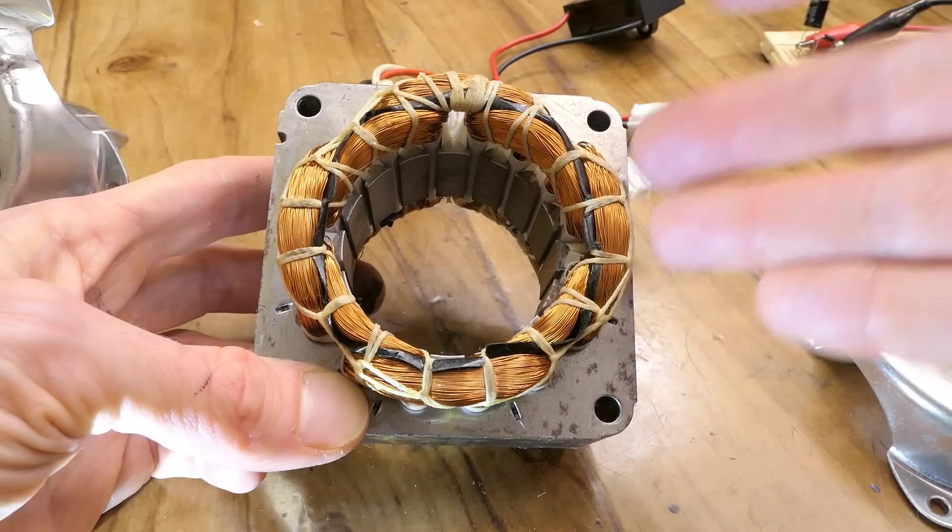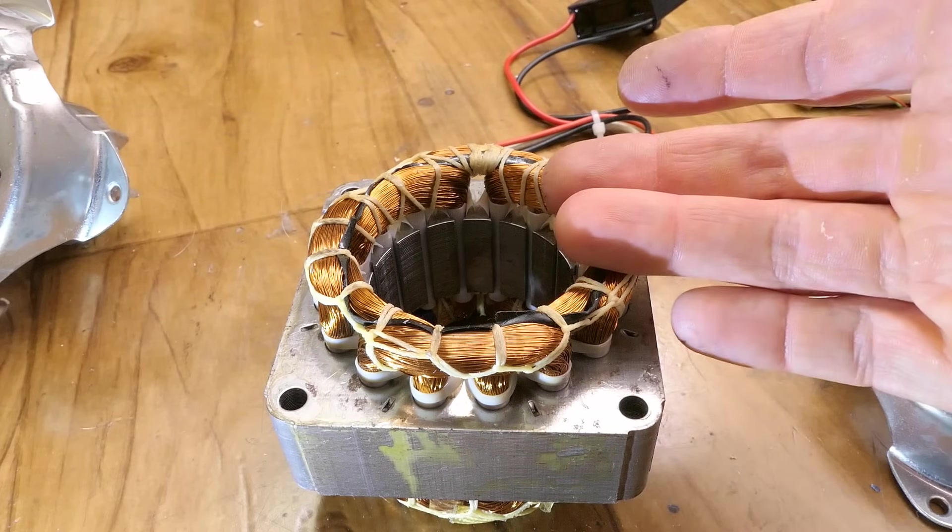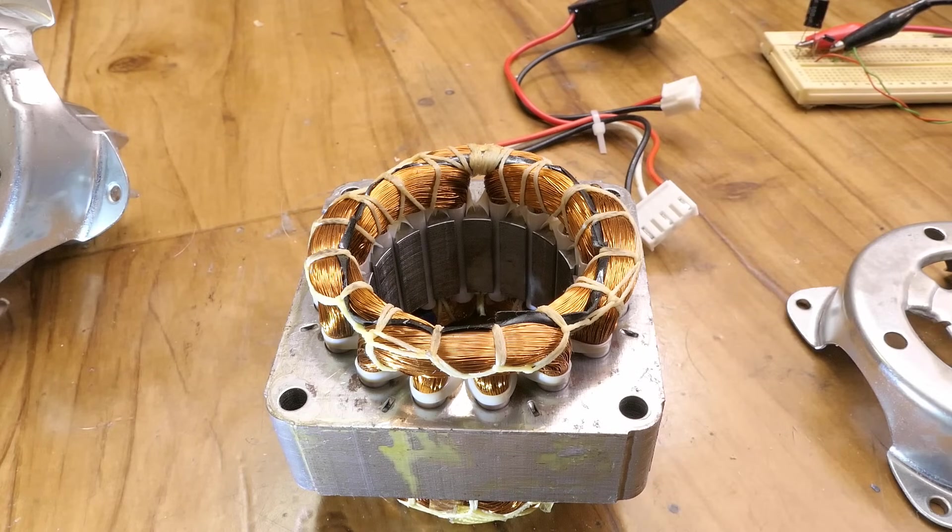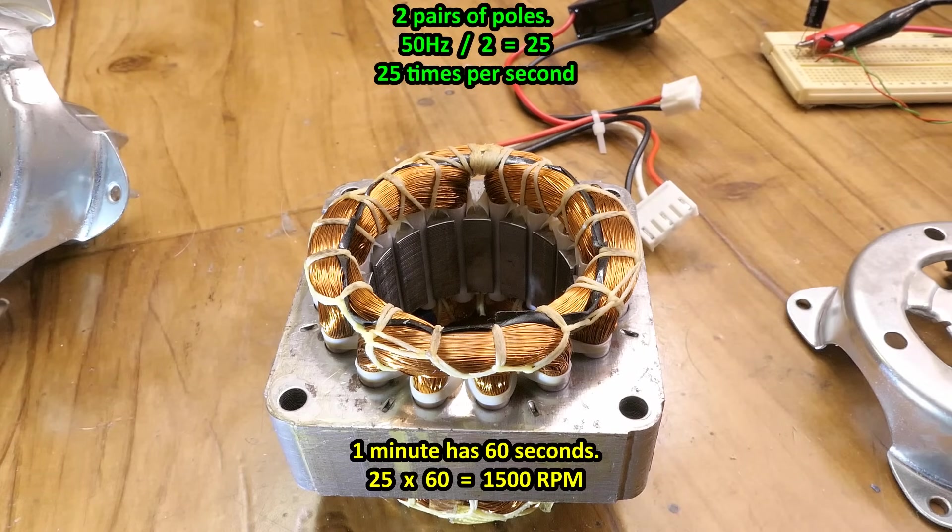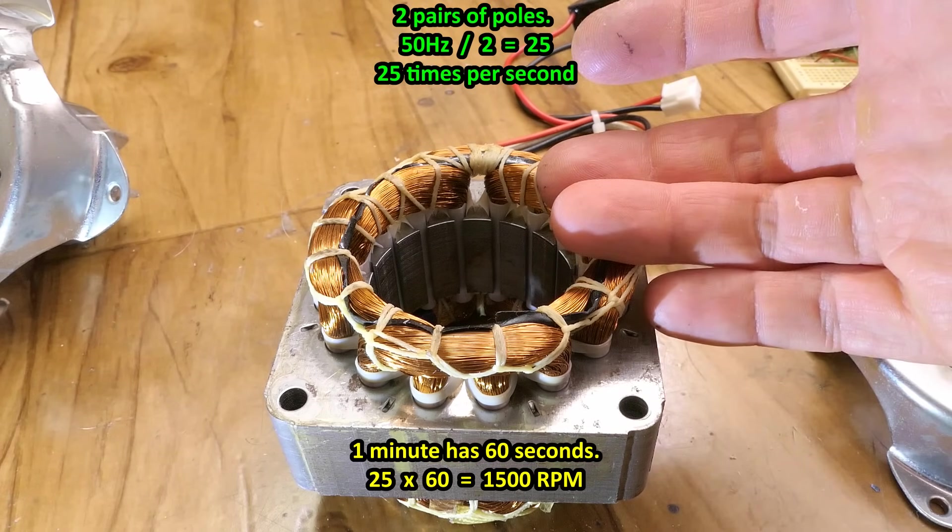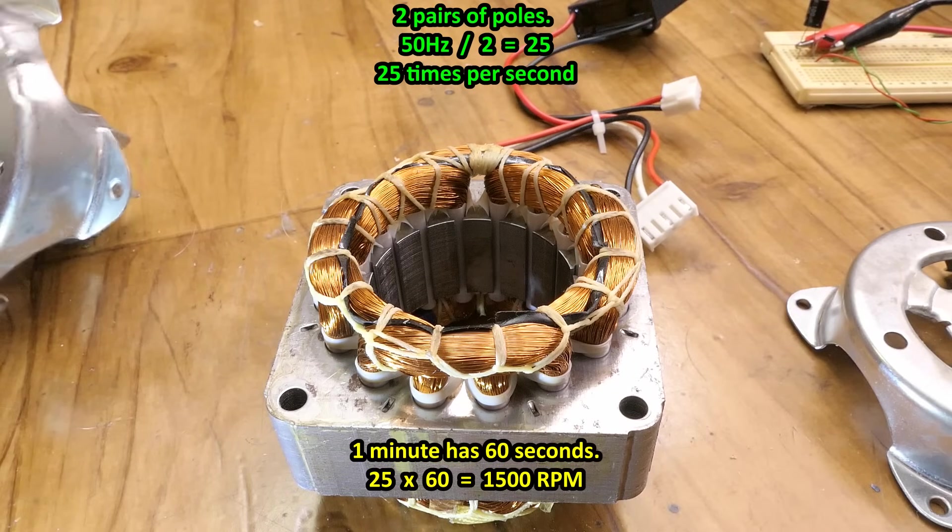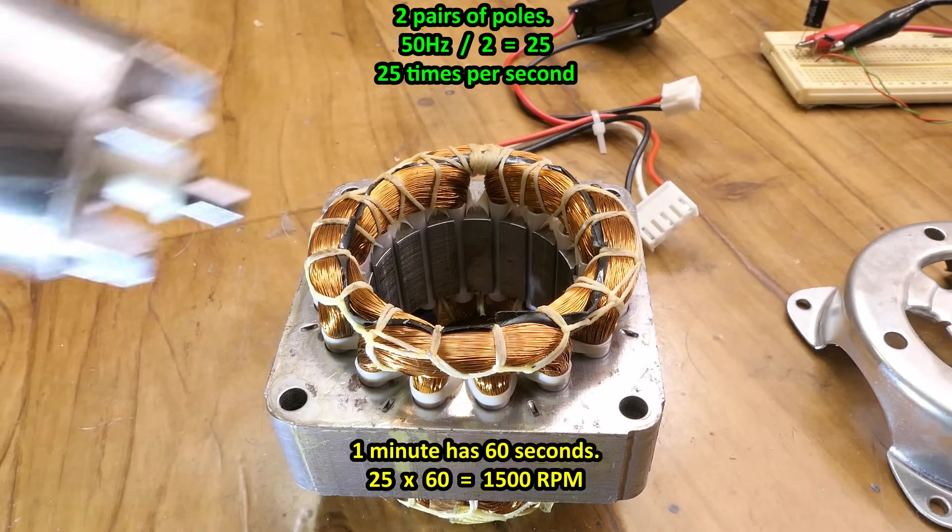And because it has four poles or two pairs of poles, the main frequency is divided by two. 50 hertz divided by two pairs of poles is 25 revolutions per second or 1500 rpm. This is how fast the magnetic field is turning in it. And if the motor was synchronous the rotor would be turning at the same speed. But because it's asynchronous the rotor is turning a little bit slower because of the slip.